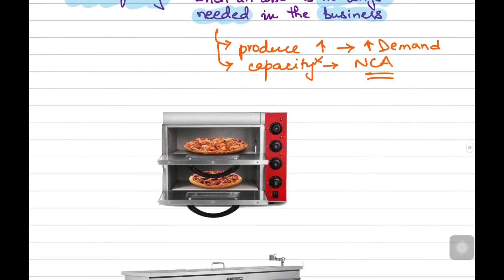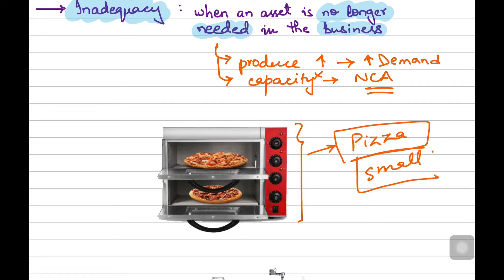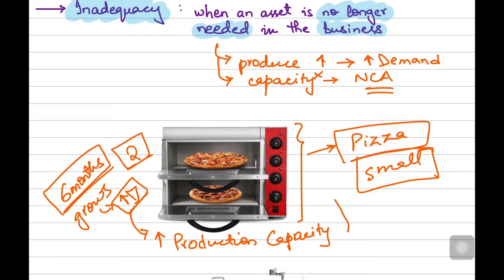Let's understand this through an example. There is a business which owns two ovens in order to deliver pizzas to its customers. Since it was a very small business, it just owned two ovens and this was enough — meaning it can only bake two pizzas at a time. But let's suppose that after six months of its establishment, the business grows rapidly. It sees an increase in demand and now has no option but to increase its production capacity. Do you think it can still do that if it still employs those two ovens? Would it satisfy the increasing demands of its customers? No, it cannot — it would waste a lot of the customers' time and they might switch to competitors.